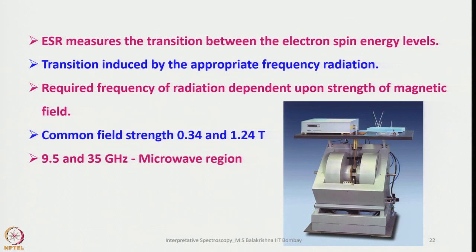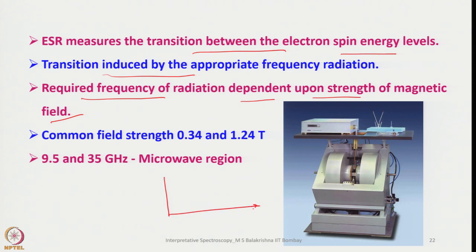ESR or EPR measures the transition between the electron spin energy levels. Transition is induced by the appropriate frequency of radiation, and the required frequency of radiation depends upon the strength of the magnetic field. As we increase the magnetic field, the energy gap between the nuclear spin steadily increases, and for higher field strength, higher microwave radiation is required to achieve the transition.